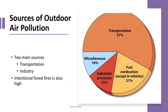Looking at where pollution comes from: based on a general worldwide average, the biggest source of air pollutants is transportation — all the cars and buses around the city. The second major source is fuel combustion excluding vehicles, accounting for about 21% — this includes wood fires, paraffin, and anything used for cooking or heating.